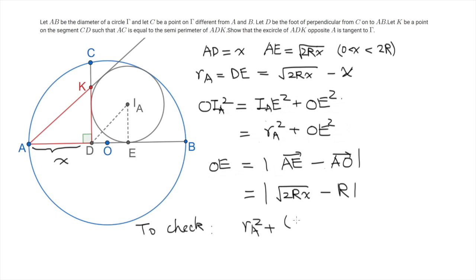Then now we just need to plug in all these terms and check that indeed the relation we want holds. So what we need to check is RA squared plus OE squared, which is square root of 2RX minus R the whole thing squared. This is OIA squared. And we want to prove that this is R minus RA squared. Well, now the problem becomes an algebra problem and it is really easy to check that this identity holds.